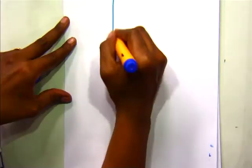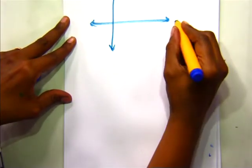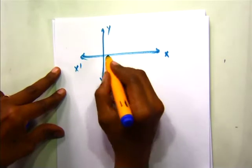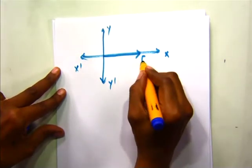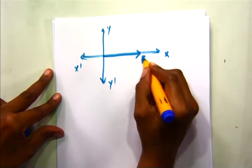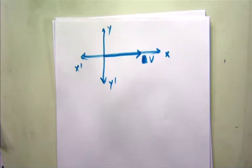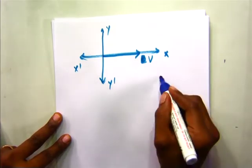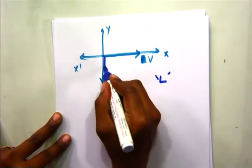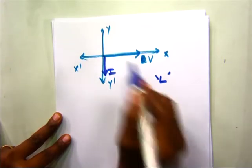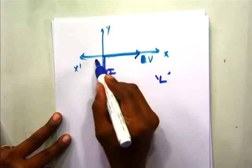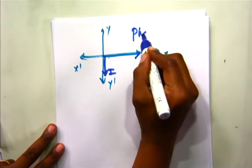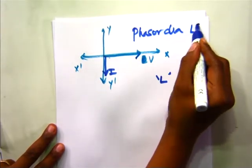For the phasor diagram: if the voltage is shown along the reference x-axis, for a resistor the current is in phase with the voltage, but for an inductor the current lags the voltage by an angle of 90 degrees. This is the voltage phasor shown along the reference, and the current is lagging the voltage phasor by an angle of 90 degrees. This is the phasor diagram for an inductor.